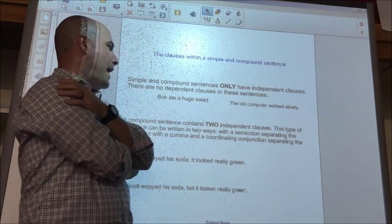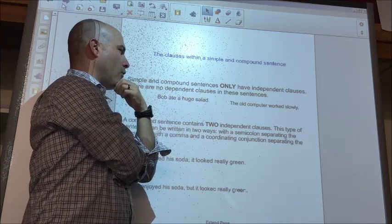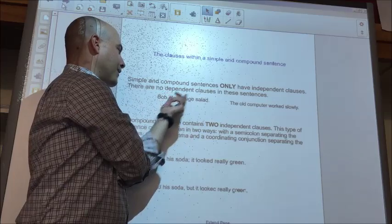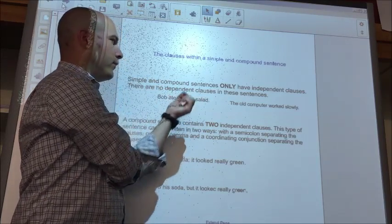So if we take a look at these two simple sentences. Bob ate a huge salad. Bob is my subject. Salad is what we're talking about or what he did. He ate a huge salad. So this is an independent clause or a simple sentence.